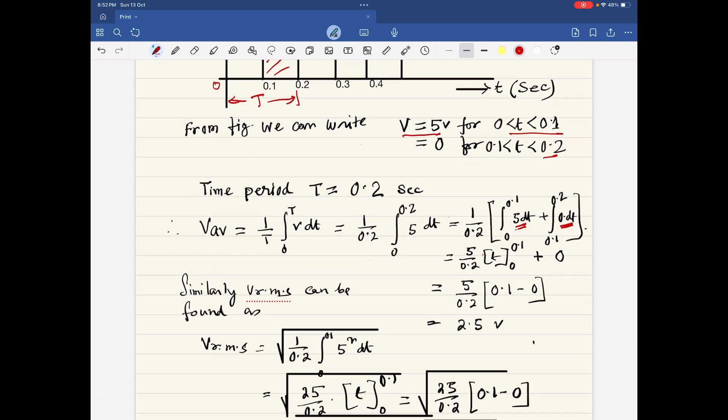Naturally, ultimately we will get 5 by 0.2, 0.1 minus 0 because this part is 0. So this is 2.5 volt.